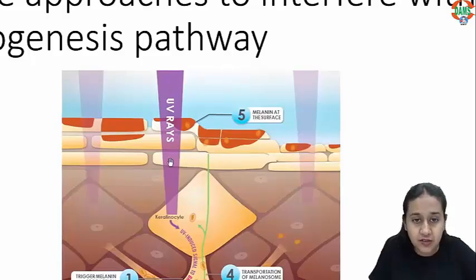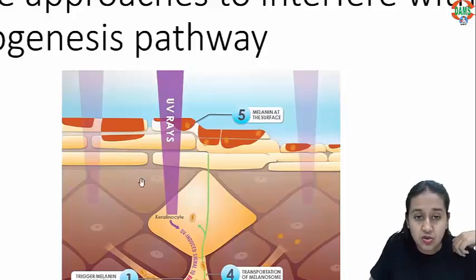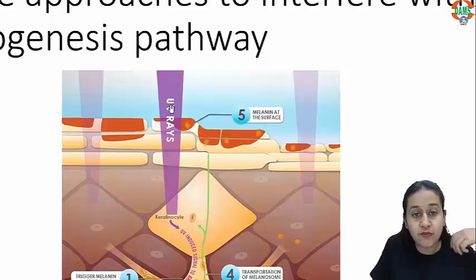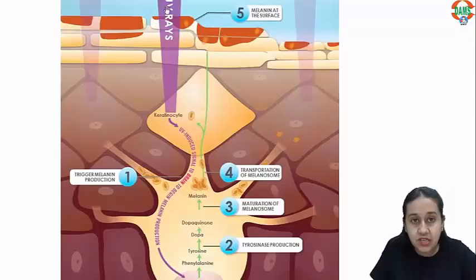So the first thing which induces the production of melanin is the UV rays. You have to protect the skin from UV radiation.